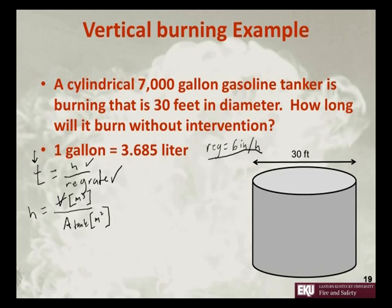So we need to calculate the volume. Volume is going to be a function of how much gasoline we have. We have 7,000 gallons. So we know one gallon is 3.685 liters, and you may or may not remember 1 meter cubed is equal to 1,000 liters. So we can use this conversion.